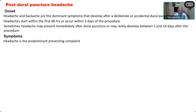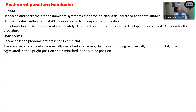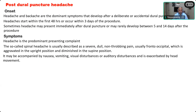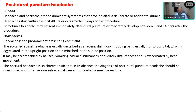The symptoms are predominantly headache — the most presenting complaint. It is the so-called spinal headache, described as severe, dull, non-throbbing. It is not a throbbing pain; it is a non-throbbing, traction-like pain. The patient may say something is pulling on the head. It is usually fronto-occipital, aggravated in the upright position and diminished in the supine position. It may be accompanied by nausea, vomiting, visual or auditory disturbances. The postural nature of this headache is the pathognomonic feature. Unless you ask the patient whether it occurs lying down or sitting up, you will not be able to diagnose this.